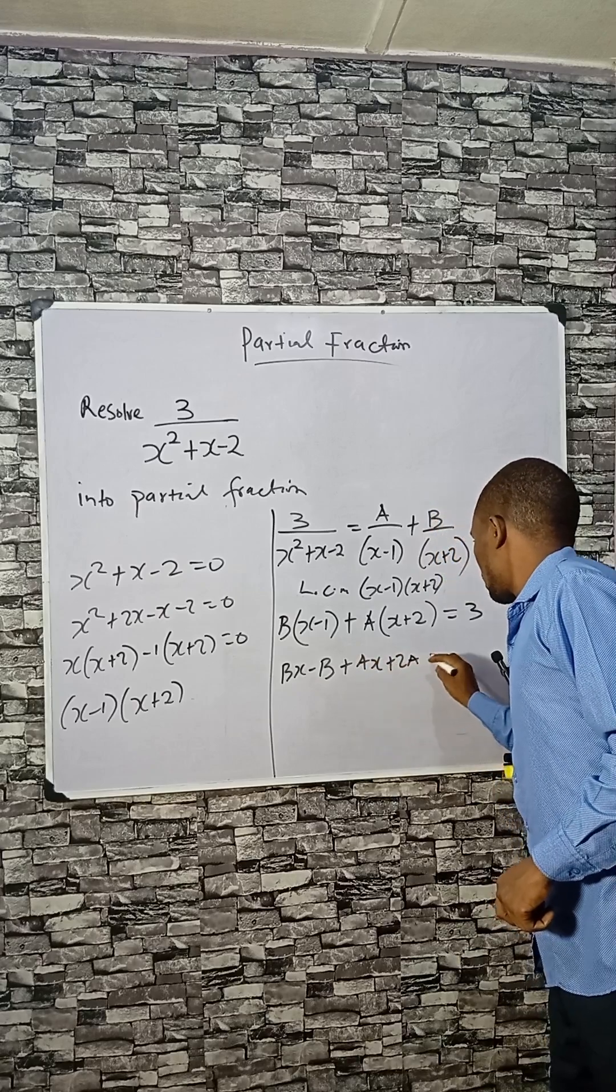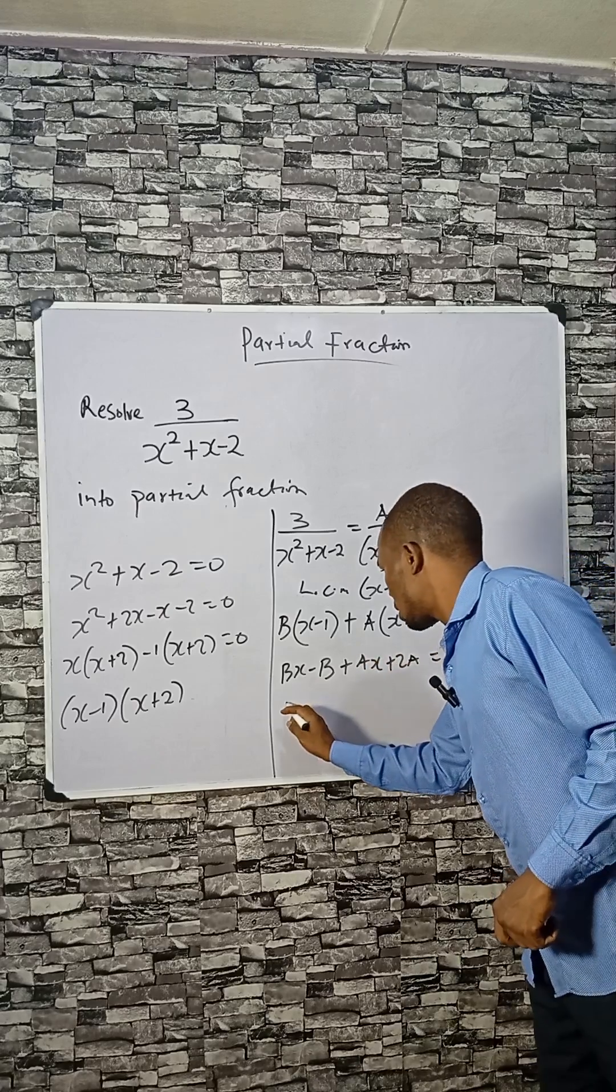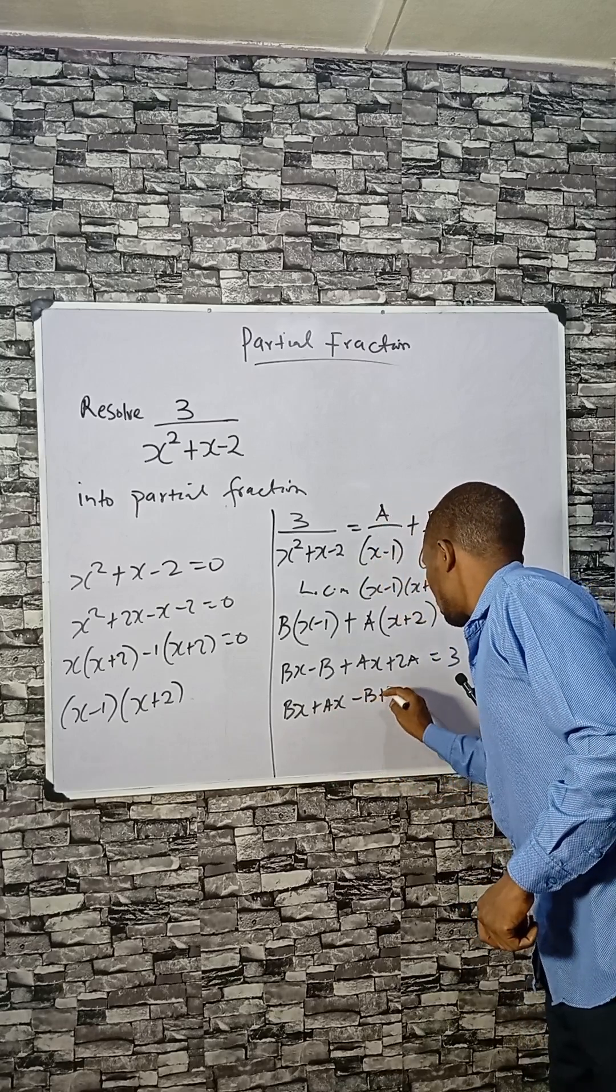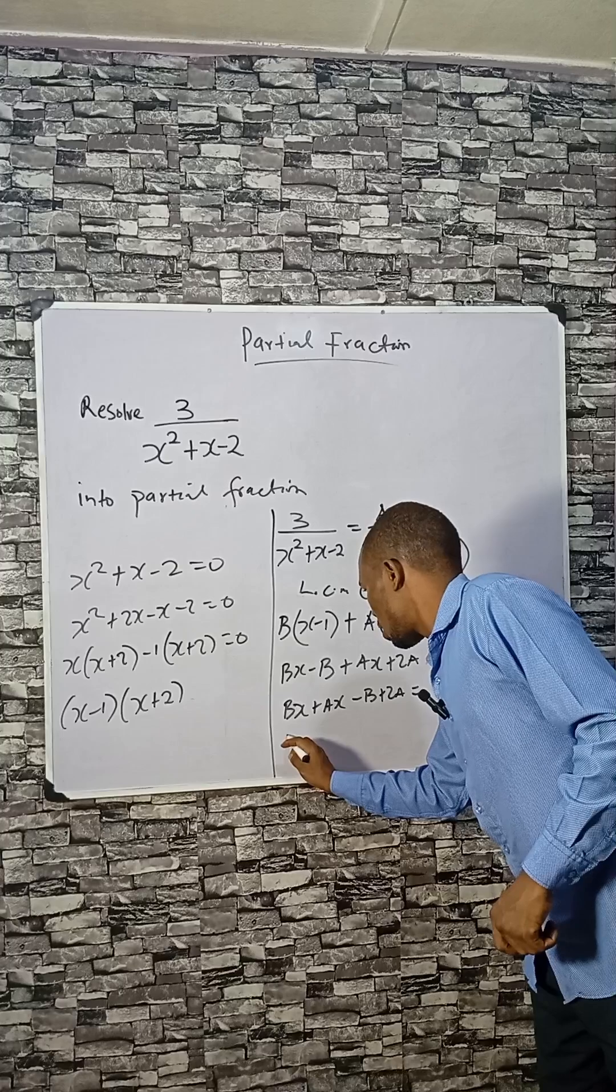Collecting like terms we have Bx plus Ax minus B plus 2A equals to 3.